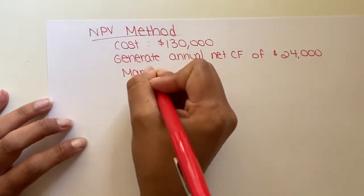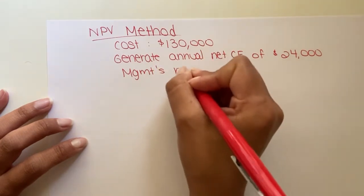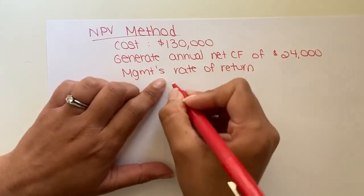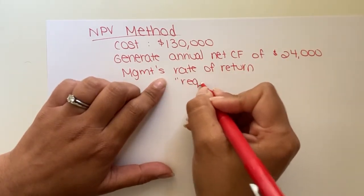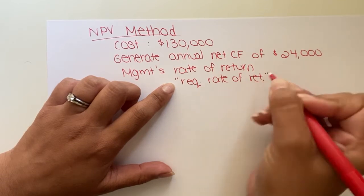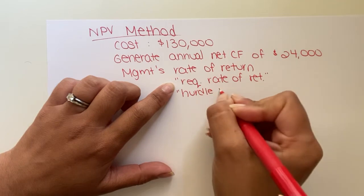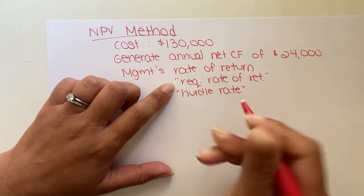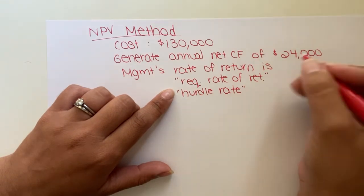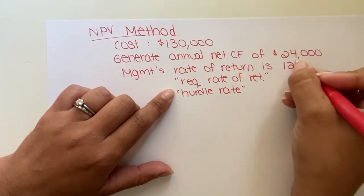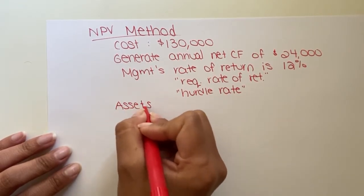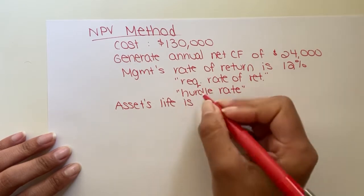Management requires a rate of return. This rate of return goes by many different names — you might hear the book call it required rate of return, you might hear the term hurdle rate. So any of those work. Management's rate of return is 12%. One more piece of information we need: the asset's life is 10 years.